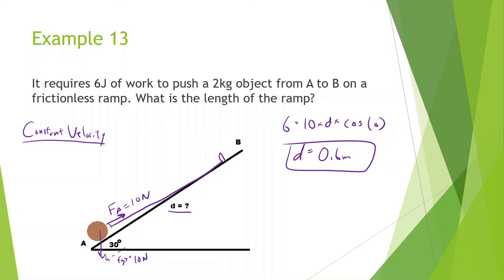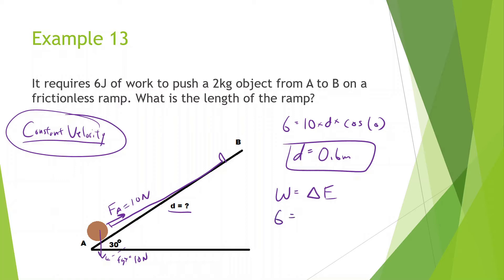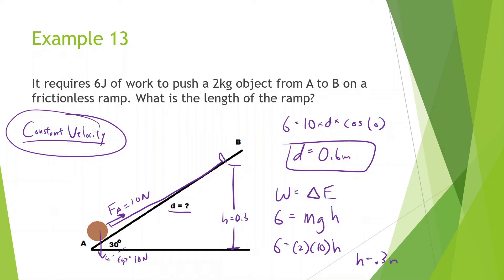Another way to do this: work done equals change in energy. At constant velocity, kinetic energy doesn't change, so 6 joules equals the change in gravitational potential energy — mass times gravity times height. So 6 equals 2 times 10 times H, giving H equals 0.3 meters. Then using sine of 30 equals 0.3 divided by D, we get D equals 0.6 meters.